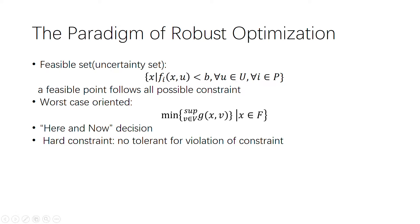Another important observation is that we adopt a here-and-now decision rule, which means that every decision we make is regardless of the parameter u, and the decision is made before the actual data u comes. Robust optimization follows from a hard constraint — all the constraints in the set big U must be considered, and any violation of the constraint will not be tolerated.